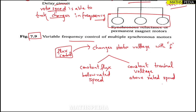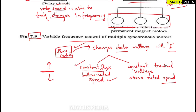The flux control block changes the stator voltage with frequency to maintain constant flux below rated speed, and constant terminal voltage above rated speed. Below rated speed we maintain constant flux, and above rated speed we maintain constant terminal voltage — that is why we are using the flux control block.